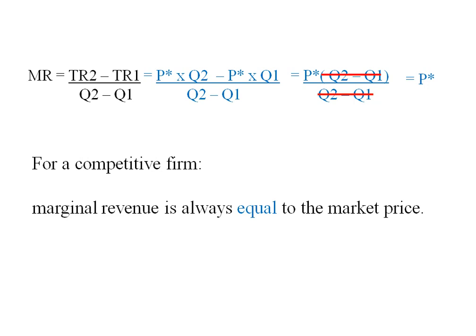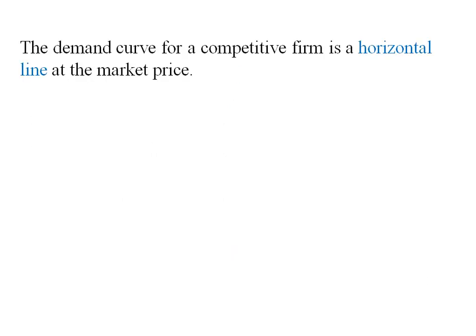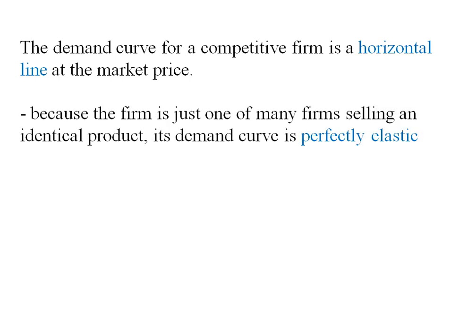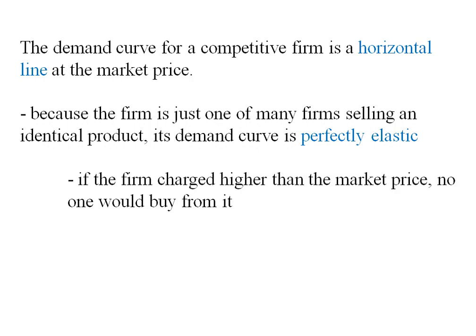This equality of marginal revenue and price is not true for every kind of firm, but for a perfectly competitive firm it will be true. The demand curve for a competitive firm is going to be a horizontal line at the market price. Because the firm is just one of many firms selling an identical product, the demand curve it faces is perfectly elastic — a horizontal line.